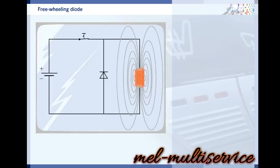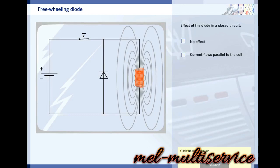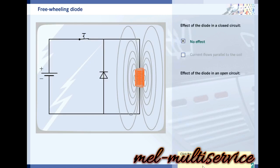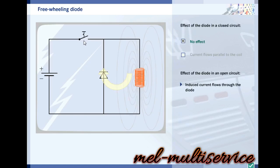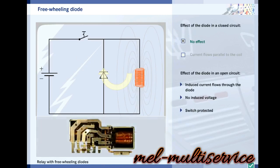The remedy is to install a freewheeling diode. Because the diode is installed under reverse bias, it does not conduct during normal operation. When the switch is opened, the induced current can flow through the freewheeling diode and the induced voltage does not build up to dangerous levels. The switch remains protected. Two freewheeling diodes can be connected in parallel to relay coils.